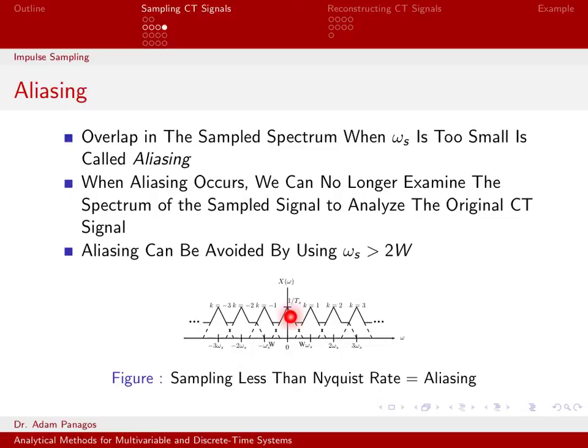This video investigated kind of a cartoon example where we had this triangular spectrum. In the next video, we'll actually work out the math for what happens when you sample a sinusoid. A little bit more concrete in terms of the math, and we'll look at how you sample the sinusoid and what its spectrum looks like for different values of sampling frequencies. And also look at what happens when you do it in MATLAB and look at sampling the sinusoid in MATLAB.